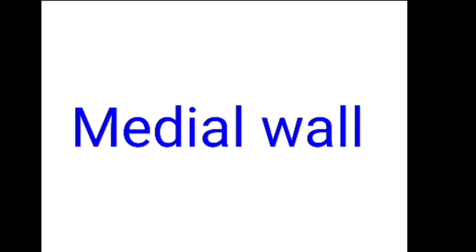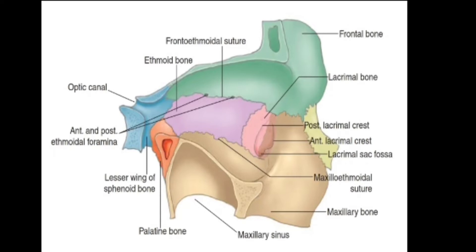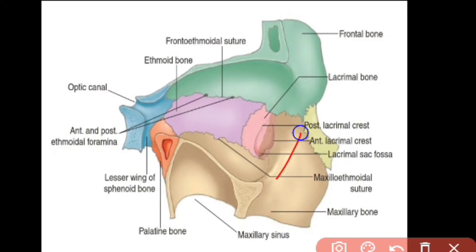Moving on to the medial wall of the orbit: it is quadrangular in shape and formed by four bones. From anterior to posterior: the frontal process of the maxilla, the lacrimal bone, the orbital plate of the ethmoidal bone, and the sphenoidal bone.